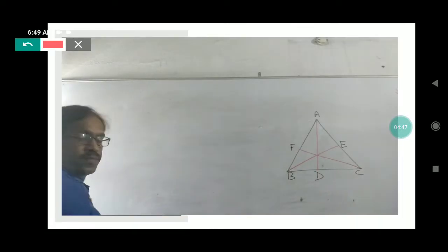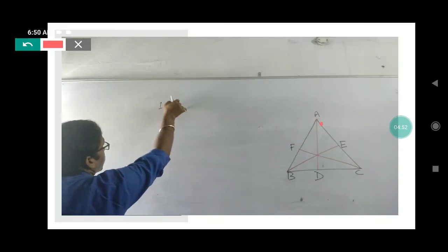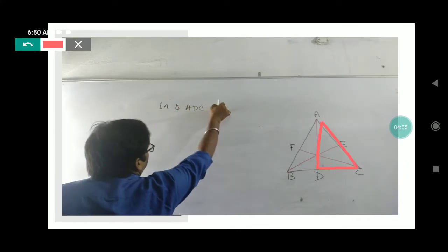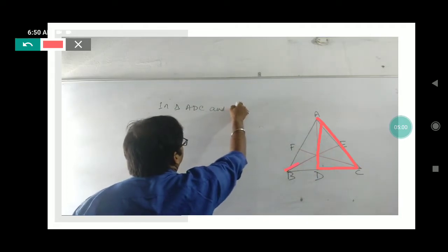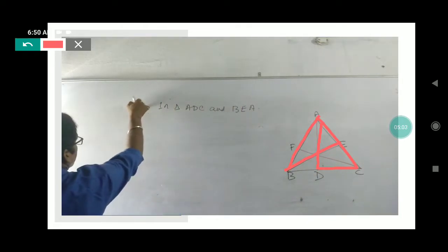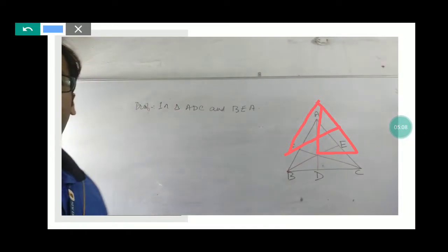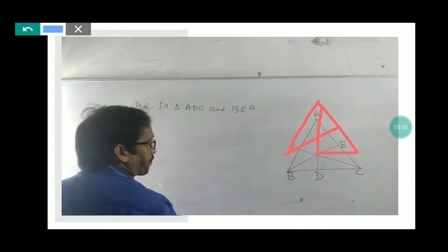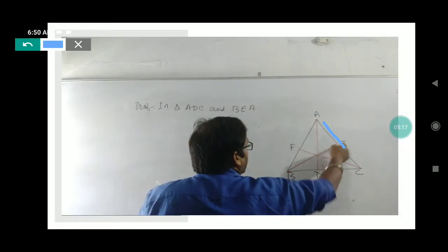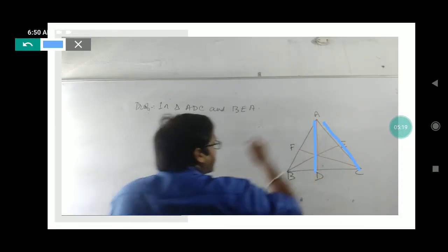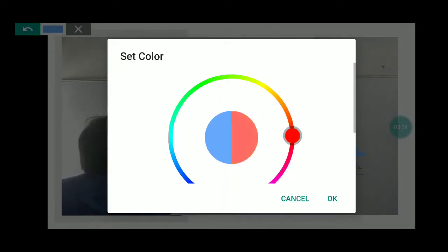To start the proof, we will select two triangles. Our selection will be triangle ADC and triangle ABE. In these two triangles, we need to identify which corresponding parts are equal. Looking at the figure, this side is equal to this side. Why? Because AB is equal to AC. Then by the median property, this part is also equal to this part.